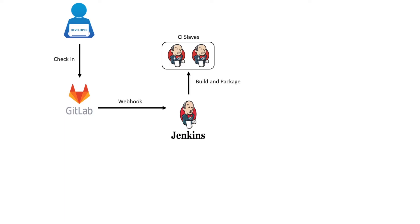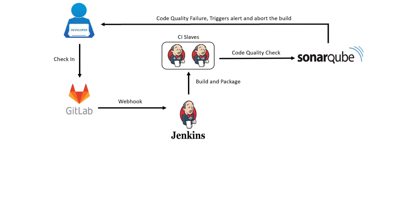In the next stage, Jenkins uses the SonarQube scanner plugin for continuous inspection of code quality, to perform automatic reviews with static analysis of code to detect bugs, code smells, and security vulnerabilities. SonarQube offers reports on duplicated code, coding standards, unit tests, code coverage, code complexity, comments, bugs, and security vulnerabilities. When the code doesn't meet the quality standards, an alert mail will be triggered to the development team and the pipeline will be aborted.